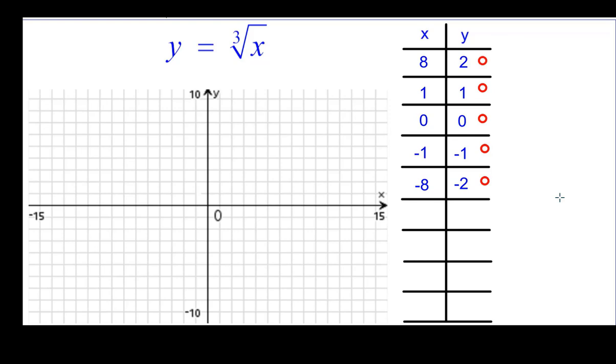So let's go ahead and plot the points. So 8, 2. The cube root of 8 is 2. The cube root of 1 is 1. The origin is on there. Negative 1, negative 1, and negative 8, negative 2.